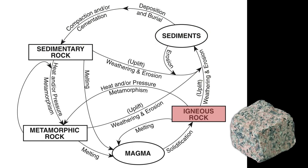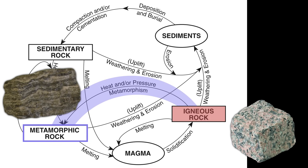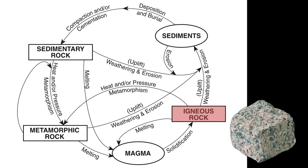But that's not the only thing that can happen to our igneous rock. What if it is pushed even deeper underground by the movement of Earth's tectonic plates? In doing so, it is exposed to intense heat and/or pressure, causing it to metamorphose or recrystallize into a metamorphic rock, like this piece of gneiss seen here. With the simple addition of some heat and pressure, we've turned our igneous rock into a metamorphic rock.